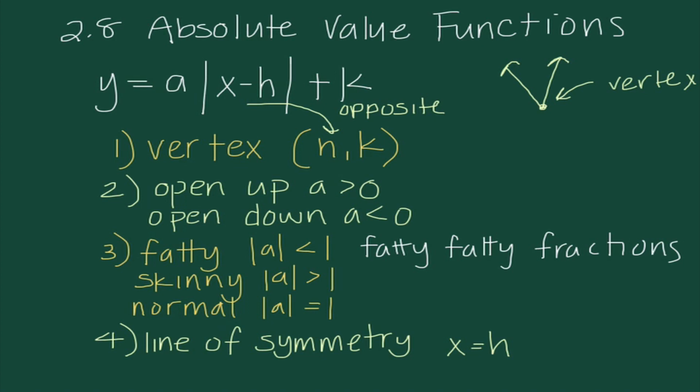The final characteristic is the line of symmetry, and that is an equation because it is a line: X equals H. We're taking the X value of the vertex, and it tells us that the V is symmetric on that line. On every single graph today, you should be writing these four characteristics down.